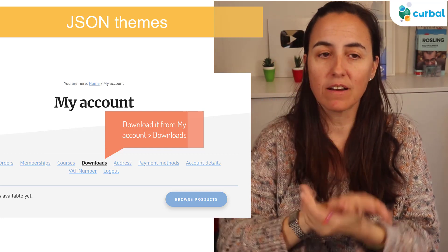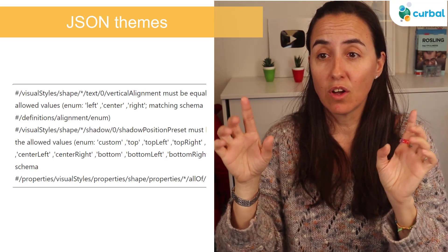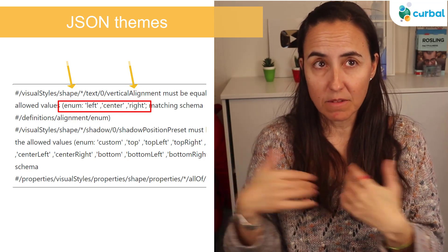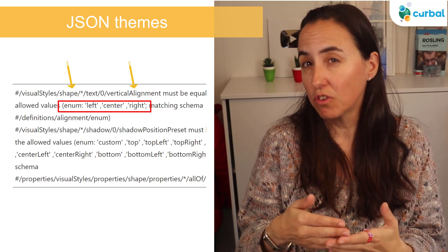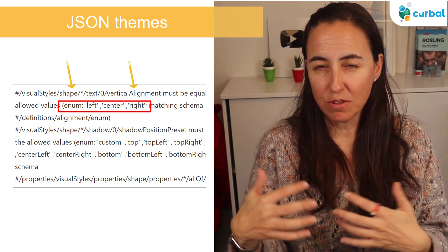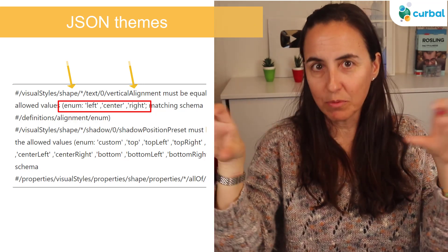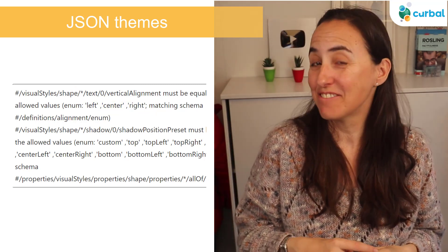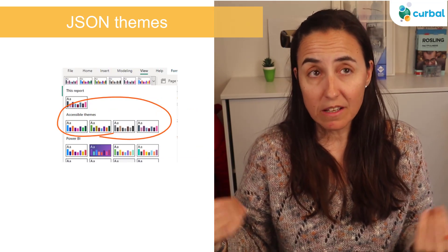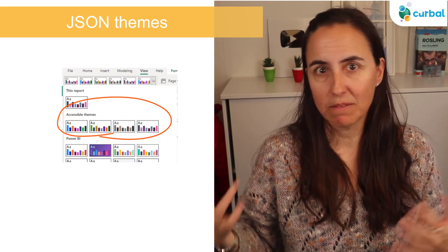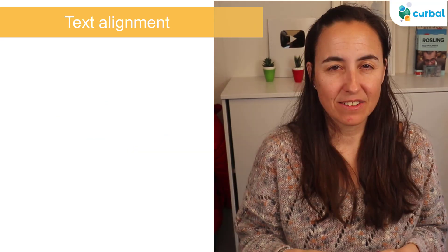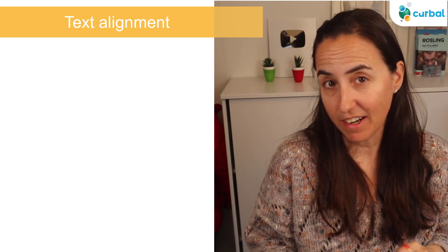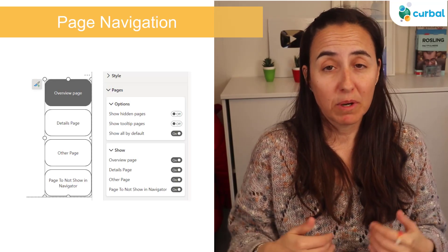This is a very nice addition because it not only tells you where something is wrong, but what it is and what you should change it to. One of the hard things when creating a JSON theme is that it's not very well documented — you have to guess what the value should be. Now the error messages will tell you: this should be zero or one, or this should be curved, linear, or log. A lot easier! They have also created more accessibility themes they believe are better, so check them out if you need them. You can now also indent text in a text visual, which is a very nice addition.